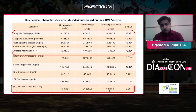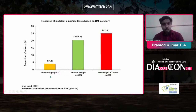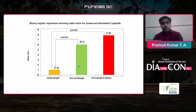GAD antibodies were seen in each of the groups with no statistically significant difference between groups — approximately 62 to 65 percent GAD antibody positivity across all groups. This figure presents the stimulated C-peptide levels across all three groups, showing that as BMI increases, preservation of C-peptide level also increases — from 4.1% to 20.4% and 25%. Stimulated C-peptide was significantly higher in overweight and obese individuals compared to underweight and normal weight individuals.